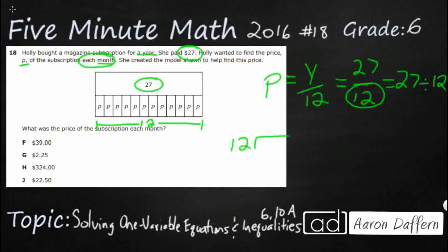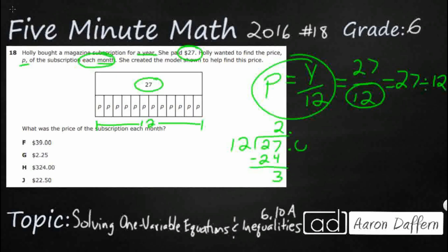Let us divide 12 into 27, because we are looking for the actual solution — not an equation or inequality to represent it, but the actual number. 12 goes into 27 two times, so that is 24, remainder 3. We add a decimal and a zero — we are not doing remainders in 6th grade. 12 goes into 30 twice again. Keep adding a zero: 12 goes into 60 five times. So we get $2.25.